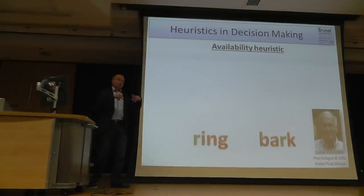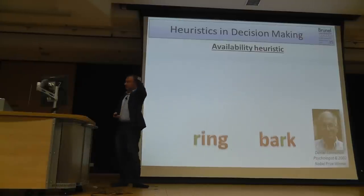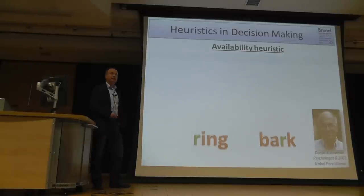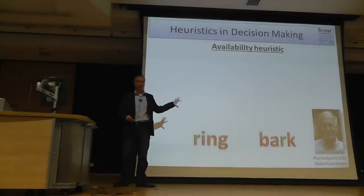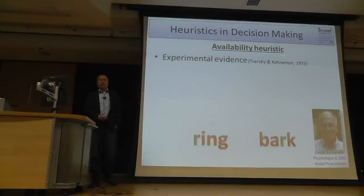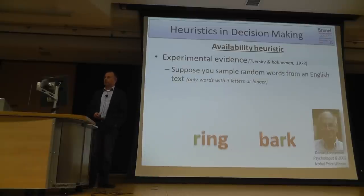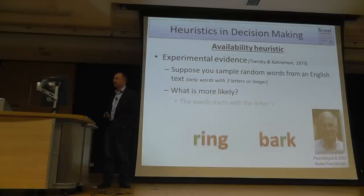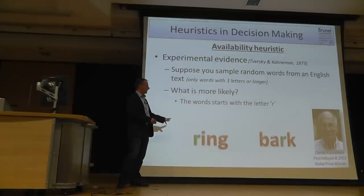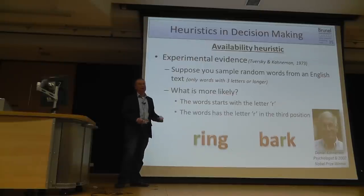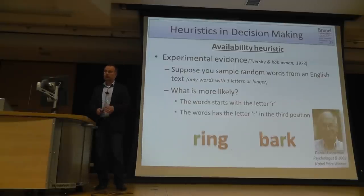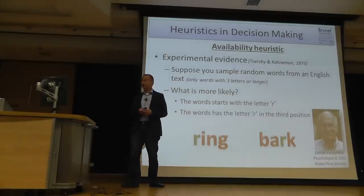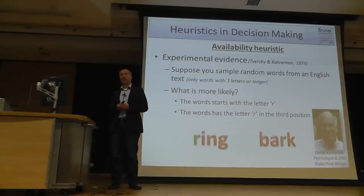A more experimental approach to the availability heuristic was done by Kahneman and Tversky — that's one of the studies in the recommended reading for today. They did the following in the early 70s: suppose you have a random word from an English text, considering only words with at least three letters. The question posed to participants: what's more likely — words which start with the letter R, or words where R is in the third position?